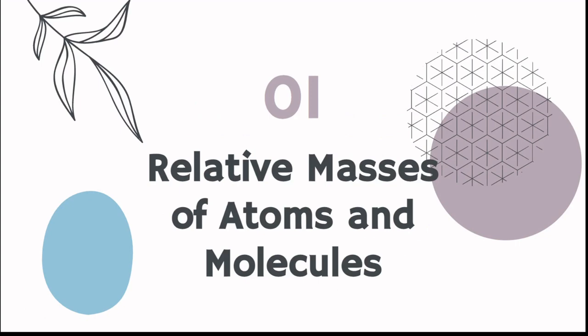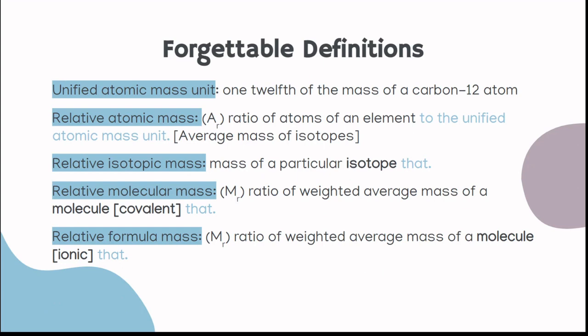Which is the relative masses of atoms and molecules. So we have the forgettable definitions that are so easy to confuse, but you have to know them. ACE really likes to give these out as quick definitions that could be two or three marks. We have the unified atomic mass unit, which is one-twelfth of the mass of a carbon-12 atom. A lot of the other definitions are based on that. We have the relative atomic mass, which is a ratio of atoms of an element to the unified atomic mass unit. Basically, it's the average of isotopes when you look at the periodic table.